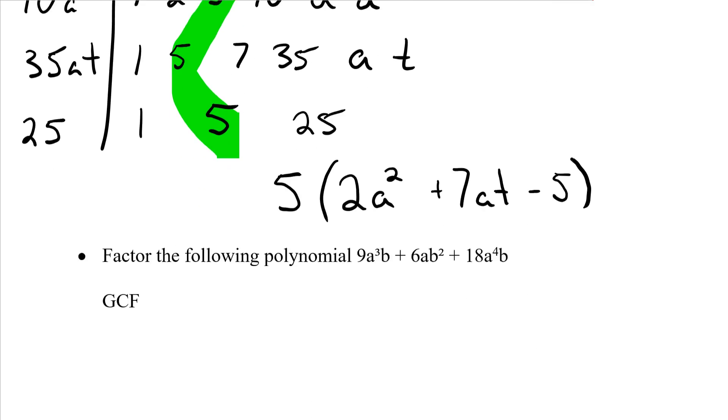Let's move on to our third example here. Factor the following polynomial: 9a³b + 6ab² + 18a⁴b. Again, terms - how many? I've got 3, making it a trinomial. Coefficients: 9, 6, and 18. I've got 3 of them this time. And how many constants - how many numbers by itself? Well, I don't have any, so the answer's not 0, but rather there are none.